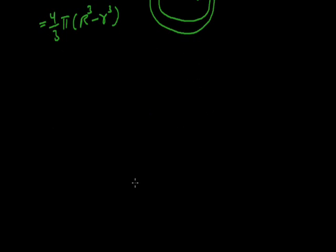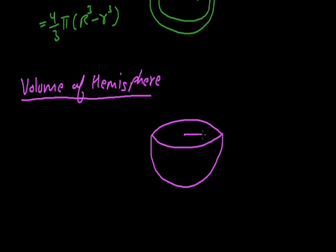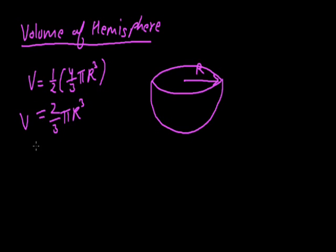Now we move to the hemisphere. The volume of the hemisphere — let's first draw the diagram. This is the shape of a hemisphere of radius r. Since the volume of a sphere is 4/3 π r³, the hemisphere is half of that: half of 4/3 π r³, which gives us 2/3 π r³. So the volume of the hemisphere is 2/3 π r³.